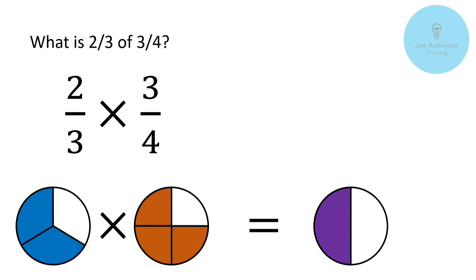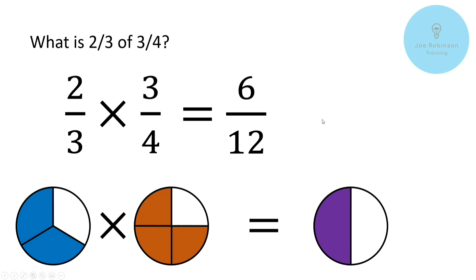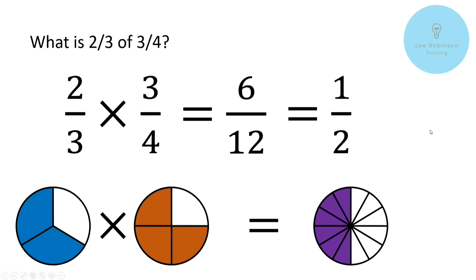So going back to our second example — two thirds of three quarters — does this work out? We said that two thirds times three quarters is one half. So let's do the maths: two times three gives us six at the top, and three times four gives us 12 at the bottom, so we've got six twelfths. However, we did say that our answer was one half, and here we've got six twelfths. Well, going back to our previous videos on simplifying fractions, if we split our pizza into 12 equal parts, we've got six of those twelfths shaded — so six twelfths is equal to one half. So it does still work. We just need to remember to simplify the fraction by cancelling it down into its simplest form.